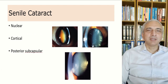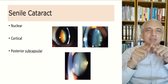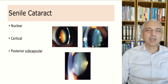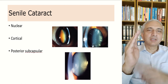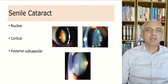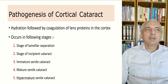There are three different types of senile cataract. The first is in the center, where the nucleus is involved. The second is in the peripheral area involving the cortex — that is the cortical cataract. The third is just in front of the posterior capsule, which is called the posterior subcapsular cataract.